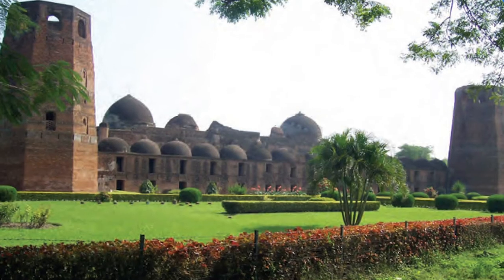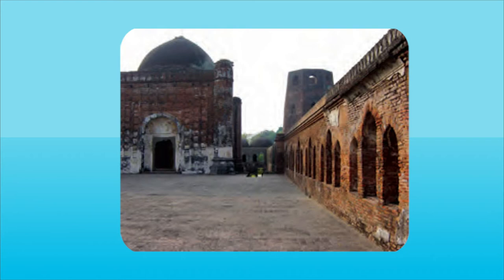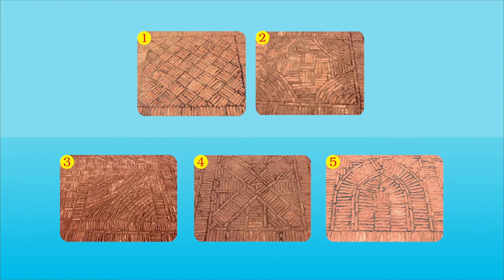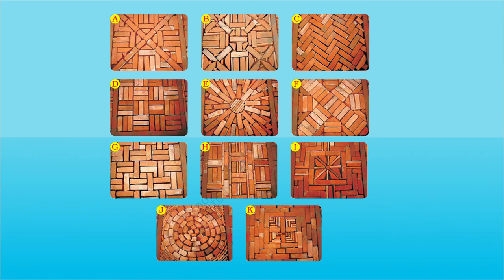Here is a true story of Jagrathi School in Murshidabad, Bengal. The masons wanted to make wonderful patterns in this school, so they visited the old tomb of Murshid Khali Khan, because this building has a big floor with about two thousand patterns. Let us watch these images of the old tomb. Look how the bricks are arranged in these floor patterns.